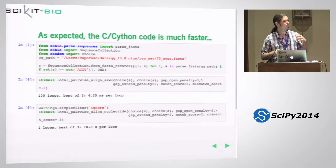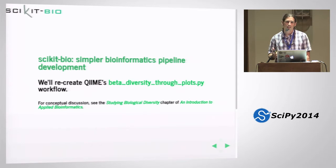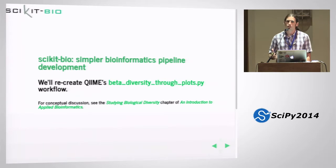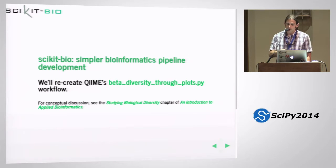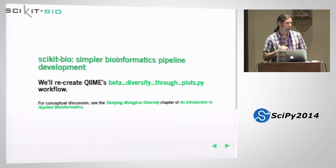One of the other things we're really striving for with scikit-bio is making bioinformatics pipeline development easy. I'm going to work through a couple of demos to show you some of the functionality. QIIME is a very widely used bioinformatics package, and the beta diversity through plot script in QIIME is probably the most widely used workflow in that software package. Because I wrote it, I can say it's a little clunky — it would be pretty hard for somebody other than me to go in and adapt it for a new bioinformatics workflow. Making that type of thing easier is one of the main things that motivated building scikit-bio.